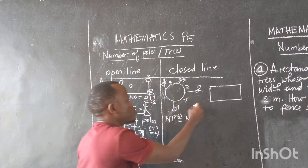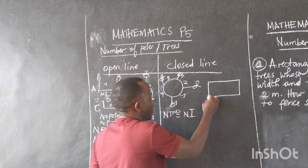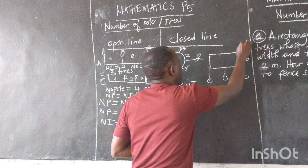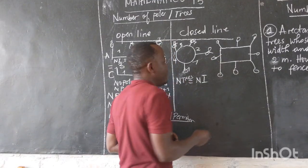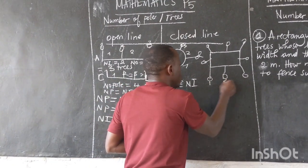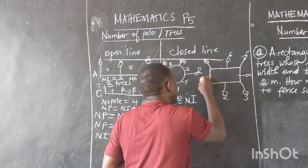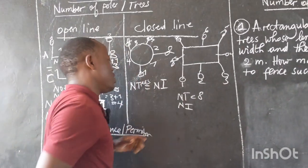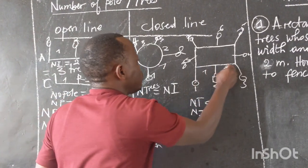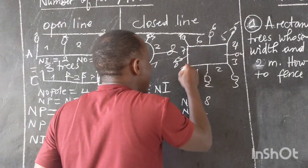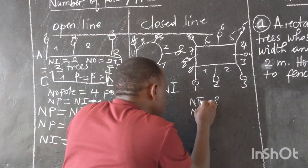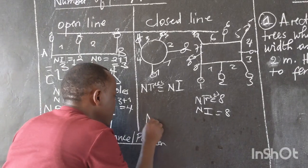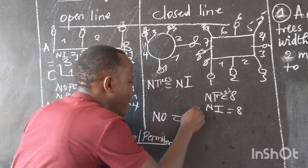Suppose this is a rectangular garden fenced with trees. We have how many trees? One, two, three, four, five, six, seven, eight. If the number of trees is equal to eight, we also see the number of intervals: one, two, three, four, five, six, seven, eight. The number of trees is equal to the number of intervals — it is also eight. That's why we say the number of objects or trees equals the number of intervals.